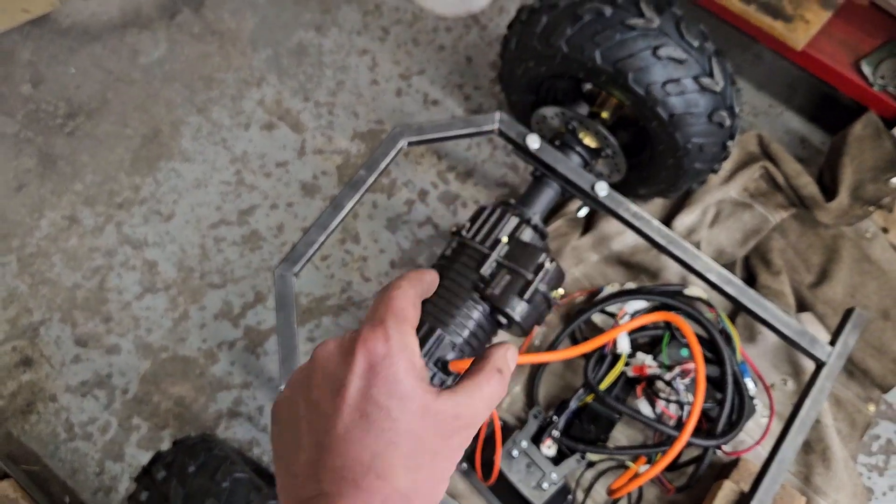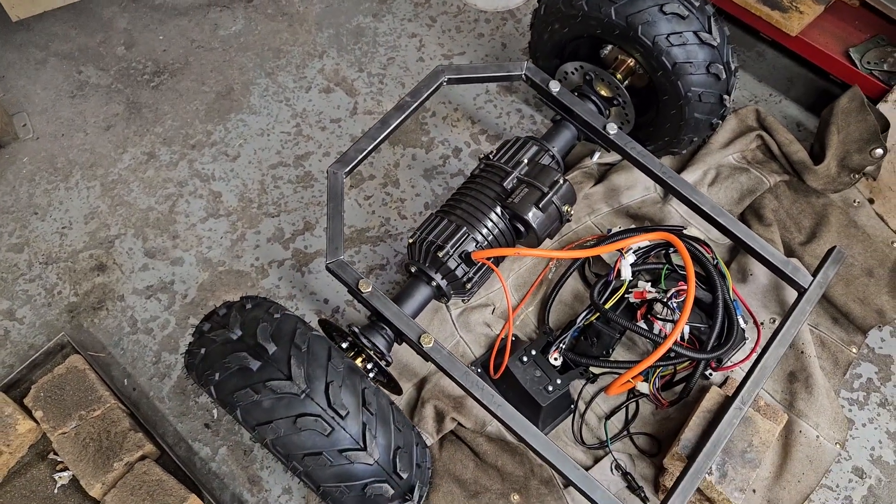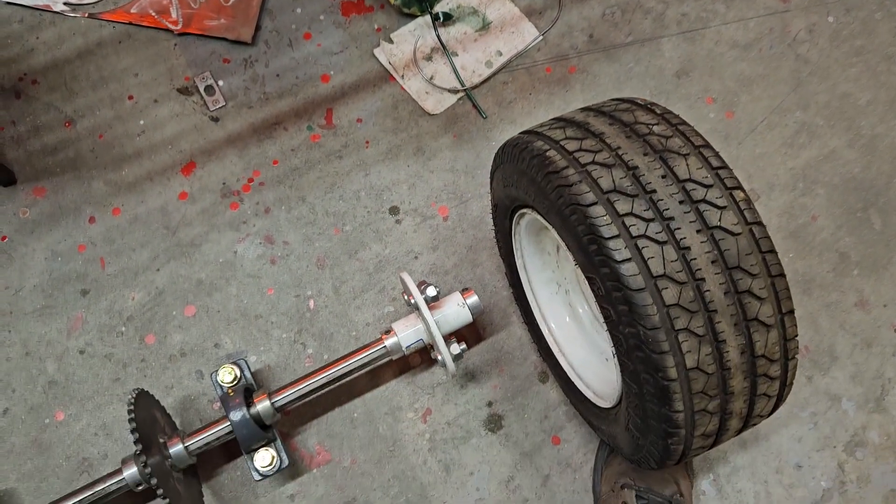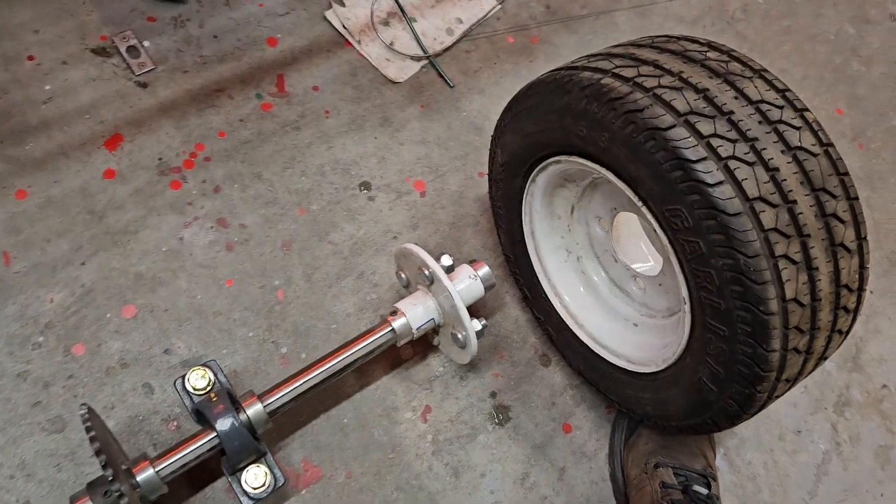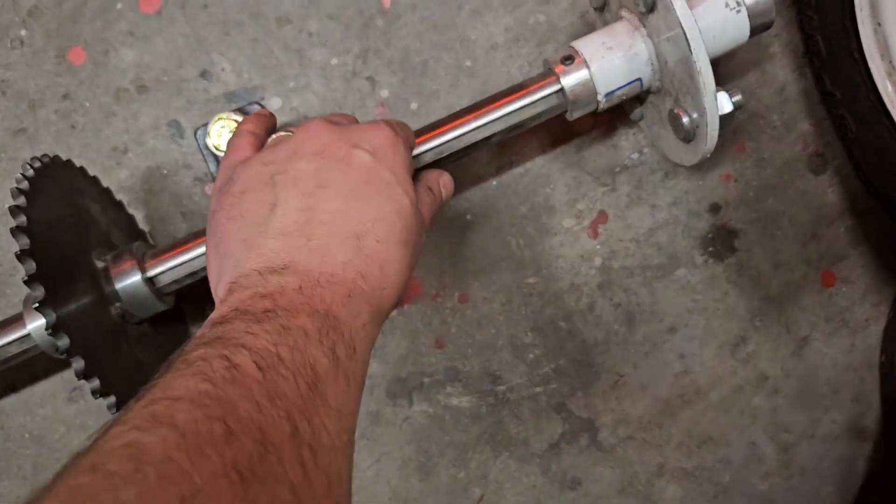This is set up the same way that I would do a live axle go-kart using pillow blocks directly clamped to the frame. All the live axle go-karts that I've done, we do a very similar setup. I like to do wheels that can bolt onto a hub onto a keyed axle.